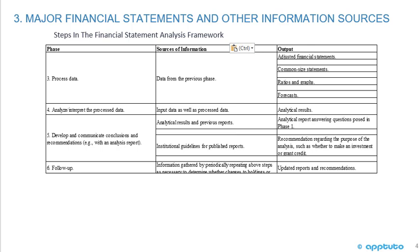For step five — develop and communicate conclusions and recommendations — the sources of information would be the analytical results, previous reports, and institutional guidelines for published reports. The output would be an analytical report answering questions posed in the first phase, and recommendations regarding the purpose of the analysis, such as whether to make an investment or grant credit.